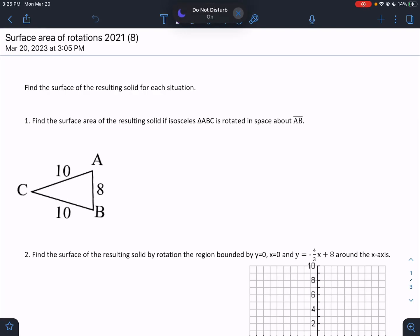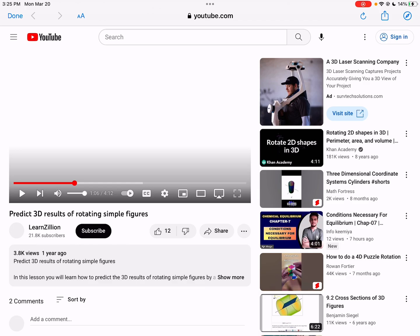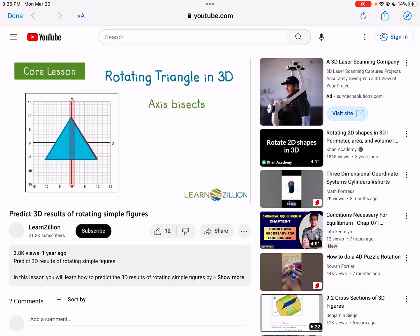Alright guys, here's the second part of today's lesson on doing rotations in three dimensions. We're going to take shapes and spin them in three dimensions to make a 3D figure. We're going to watch a video here for just a second that kind of shows these visualizations. Let's watch what happens as it rotates.